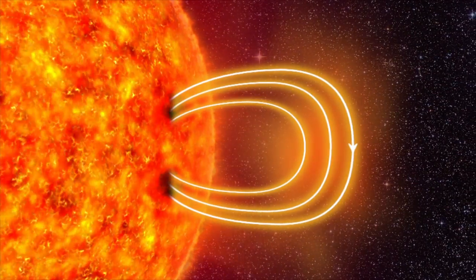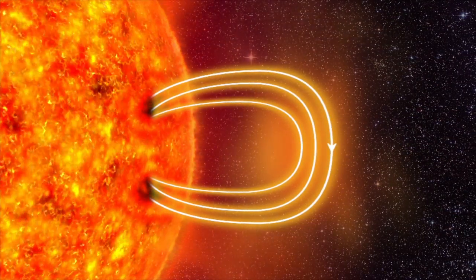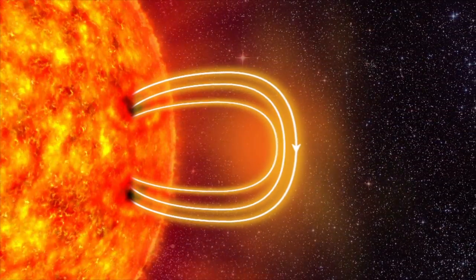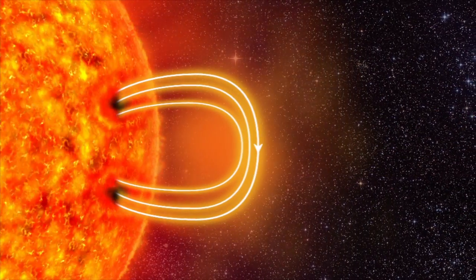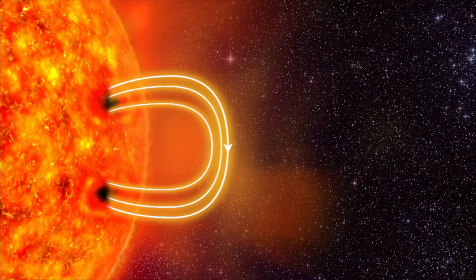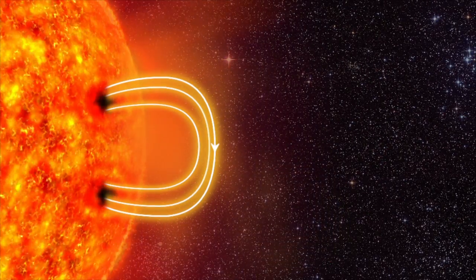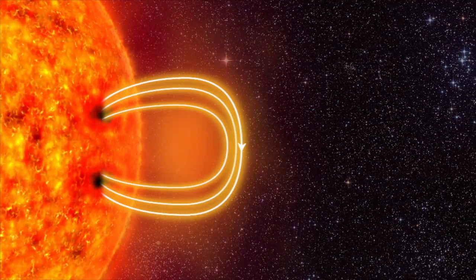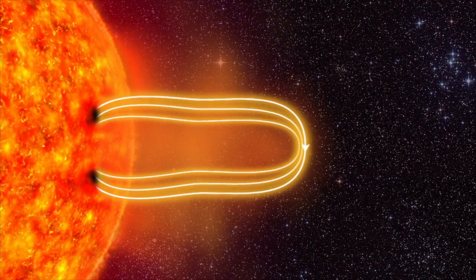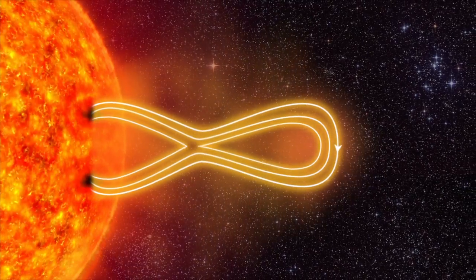The electrically charged gas is called plasma. The plasma drags the magnetic field further outwards. The magnetic field stretches and twists like a rubber band. And then the rubber band breaks.